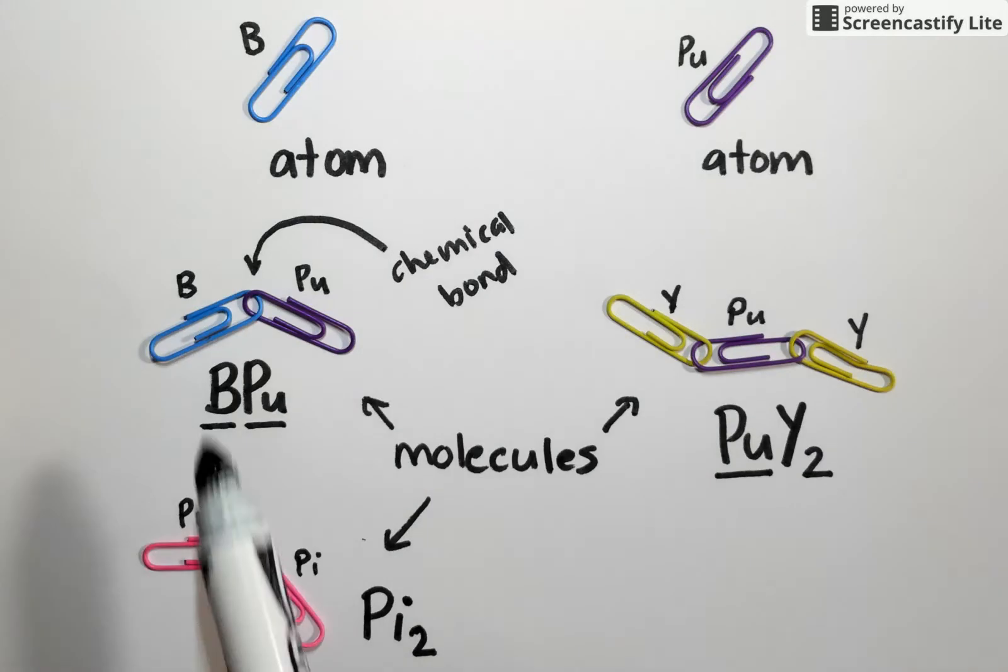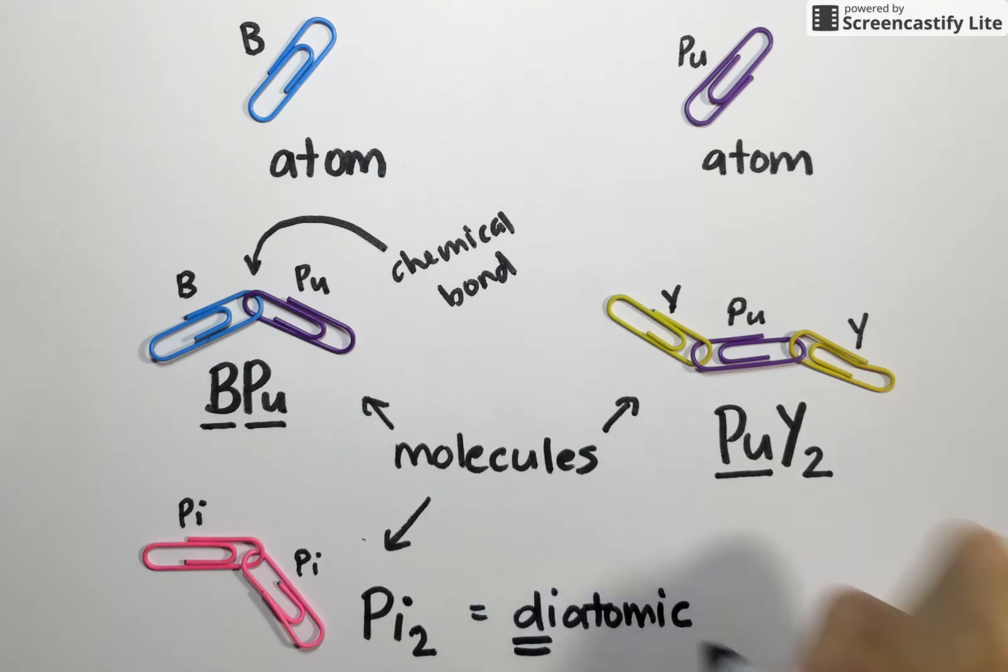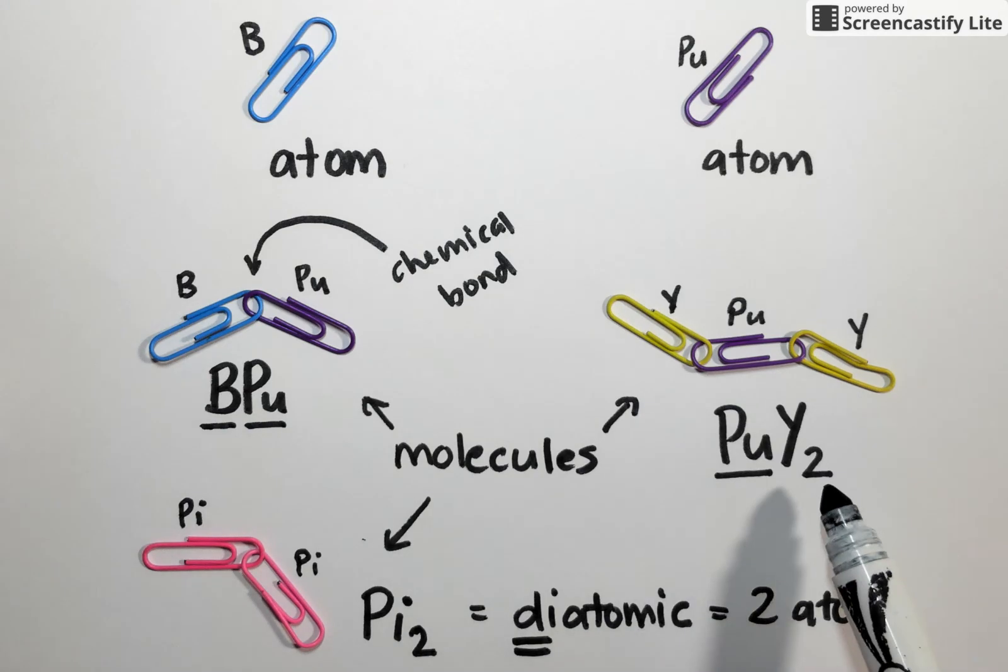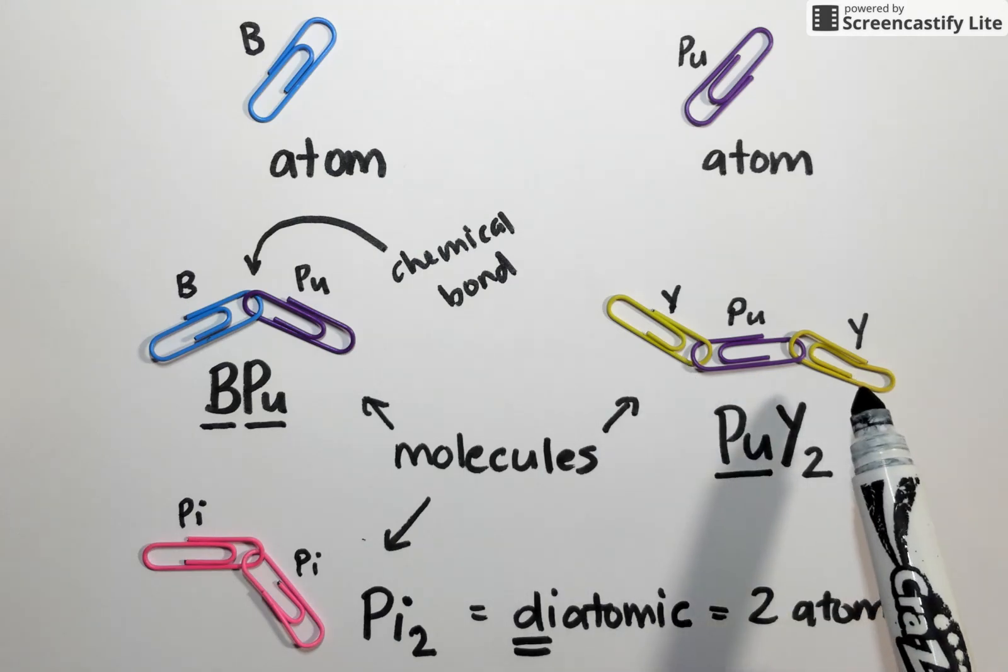You'll notice both of these molecules on the left are only made of two atoms. There's a very special chemical word for that and it's diatomic. So if I ever refer to something that's diatomic, what that means is that it's made of two atoms. So both BPU and PI2 are diatomic. However, PUY2, because it's made of one, two, three atoms, is not diatomic.